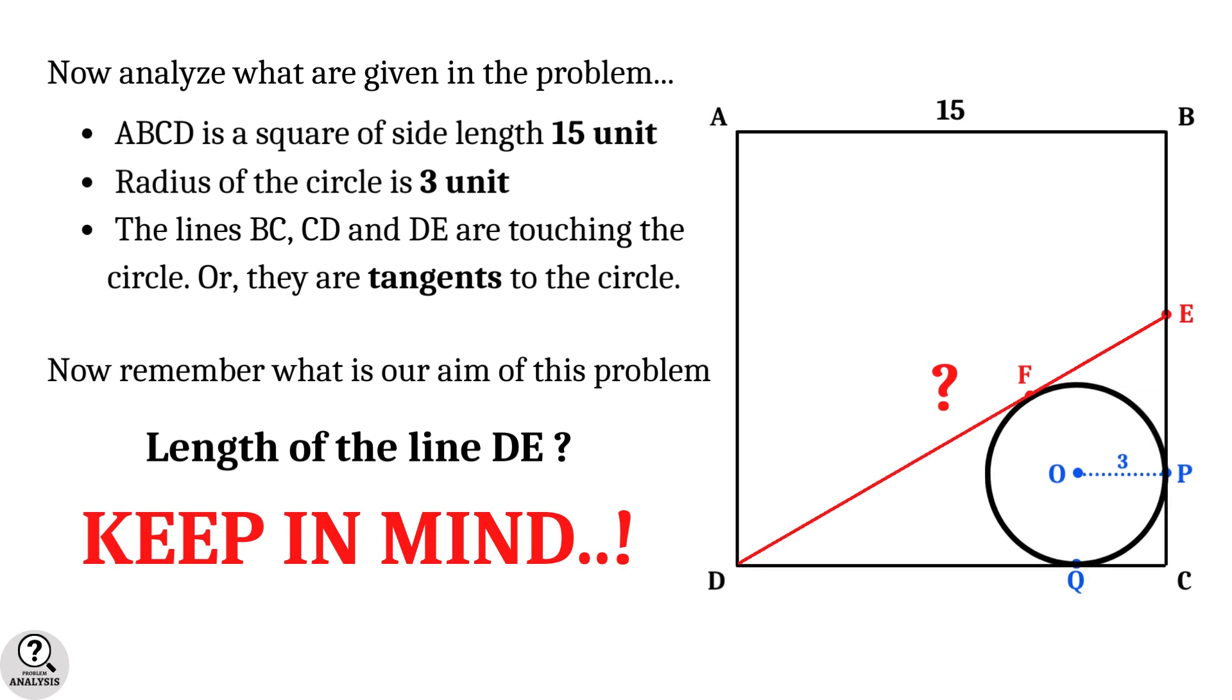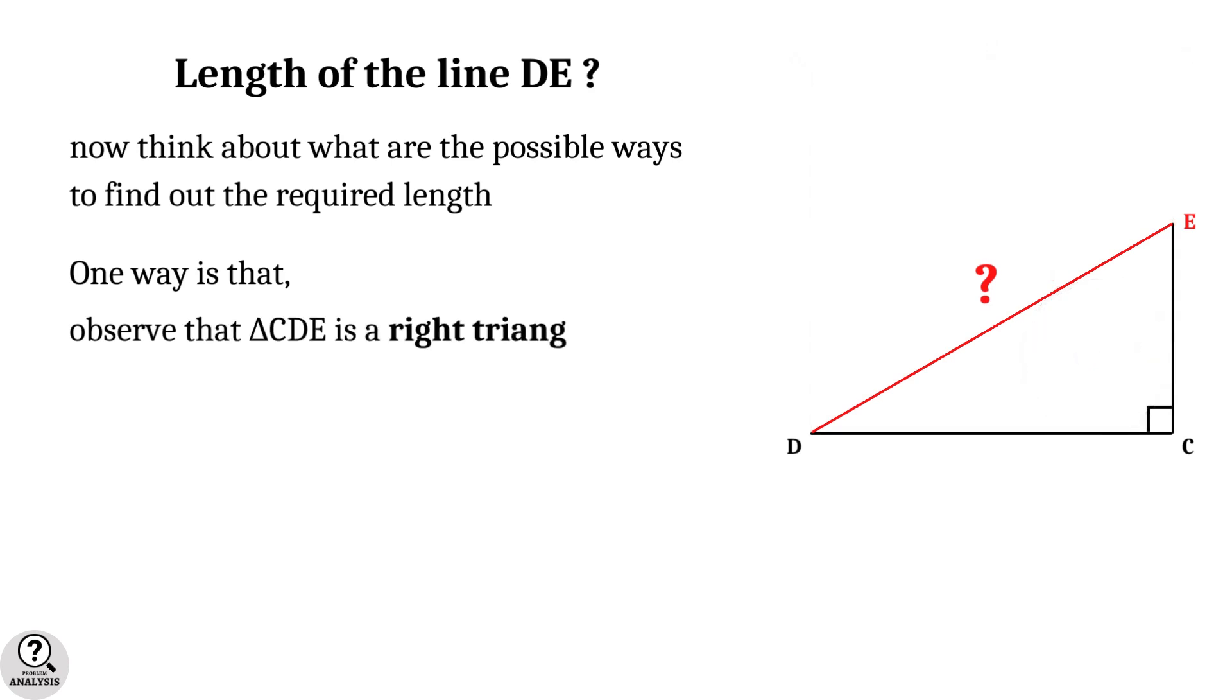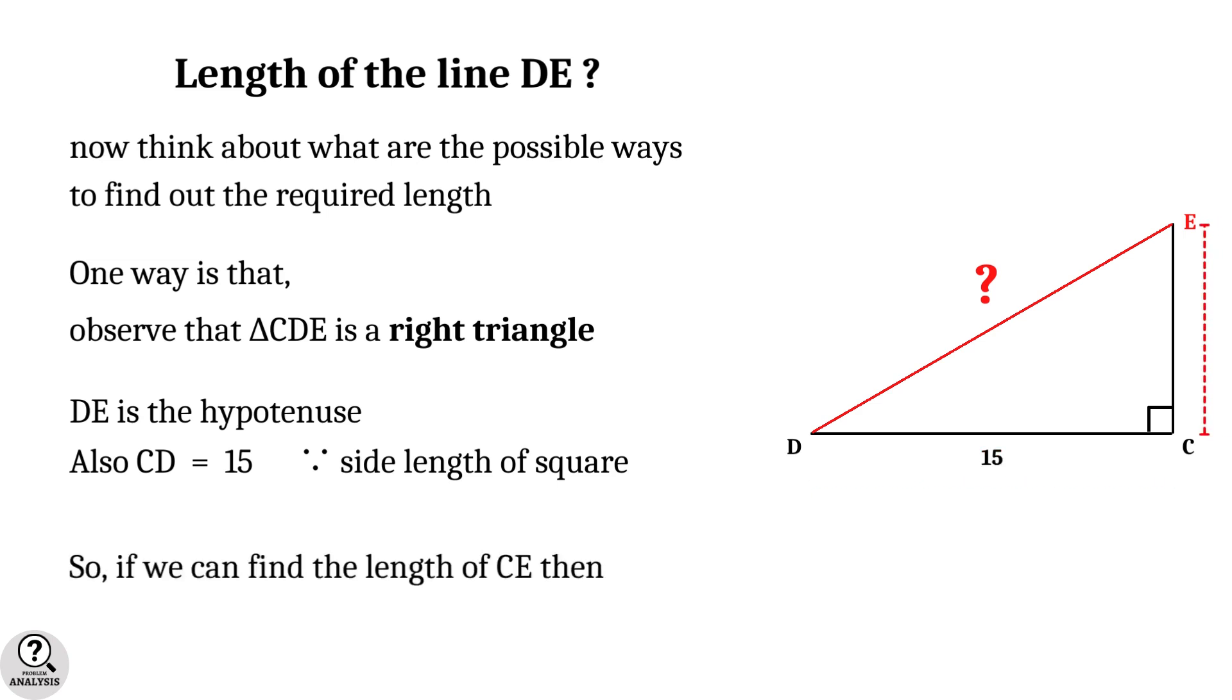This is the structure of our problem, so always keep in mind. Now just think how can we find that length. By a simple observation we can see that the triangle CDE is a right triangle and the red line DE is its hypotenuse. Also we know that the base length is 15 units because it's the side of the square. So if you are able to find the length of CE, then by applying Pythagoras theorem our answer is there.